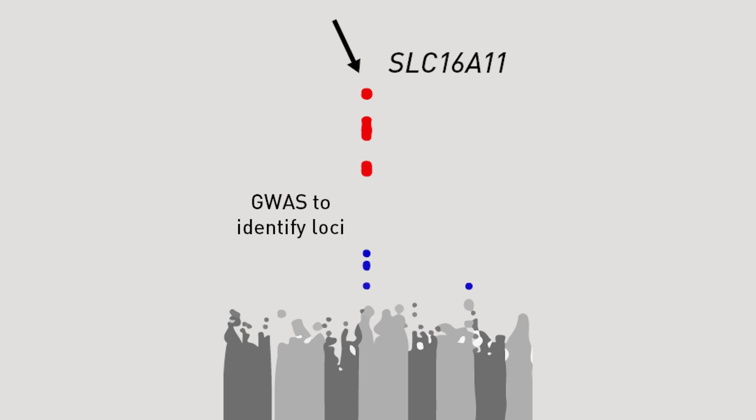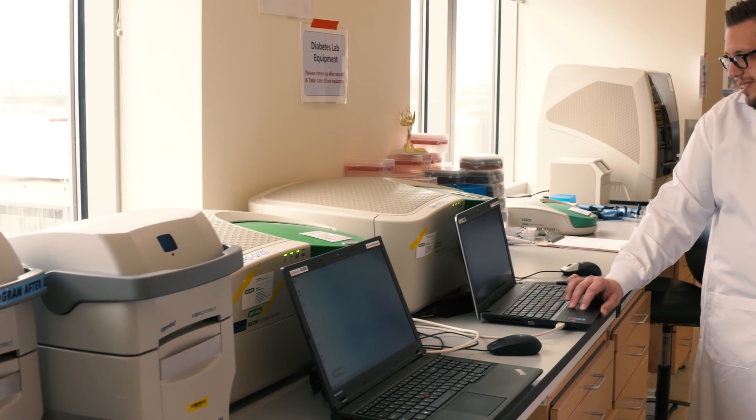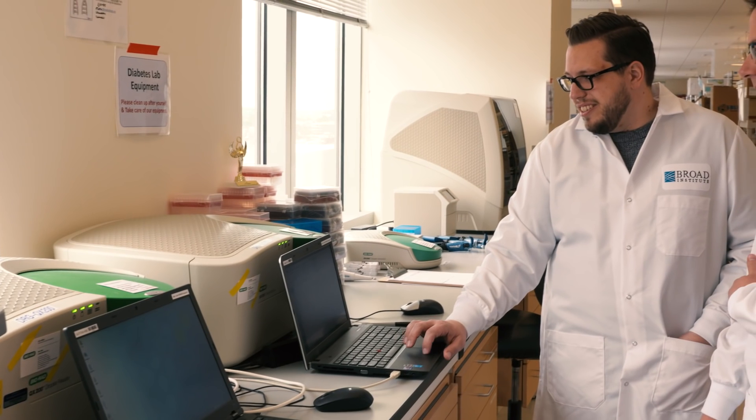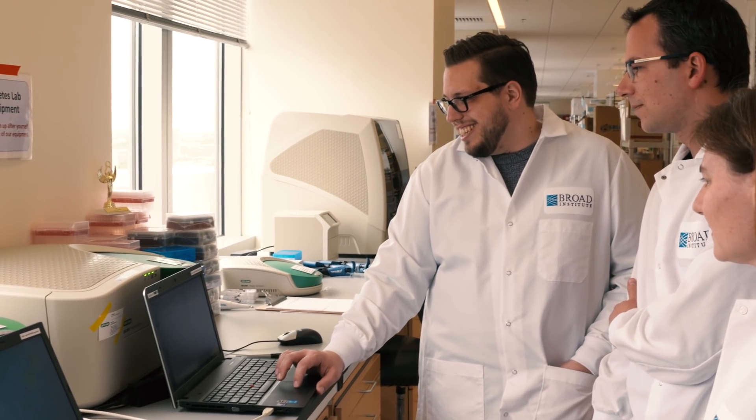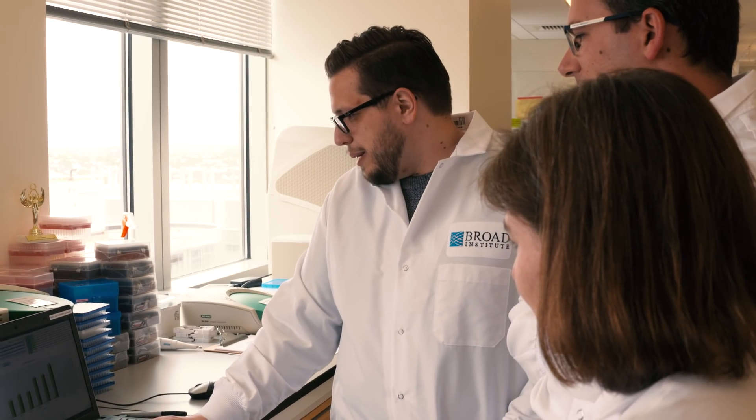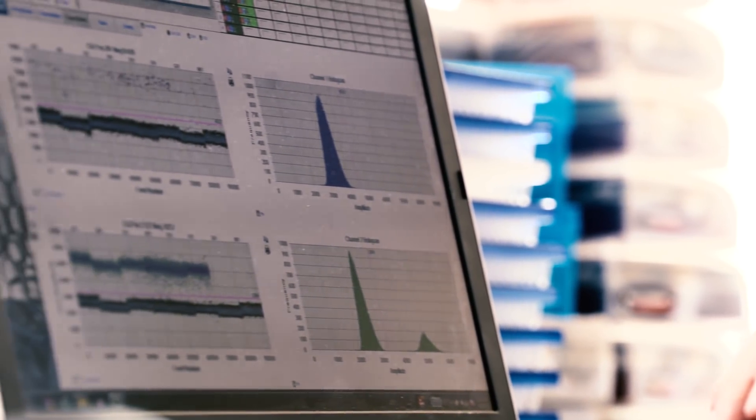From this GWAS, we found an association at the SLC16A11 locus. For some GWAS hits, if you're a little bit lucky you know what the gene is doing, and if you're very lucky you know a great deal about it. For SLC16A11, we knew nothing about it. In order to really understand what the disease mechanism is at this locus, we took an approach that combined more detailed genetic characterization with a variety of molecular and cellular approaches.